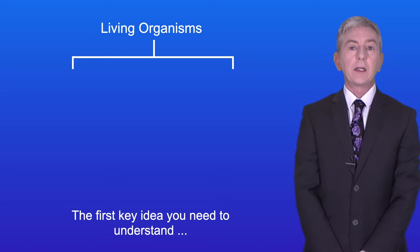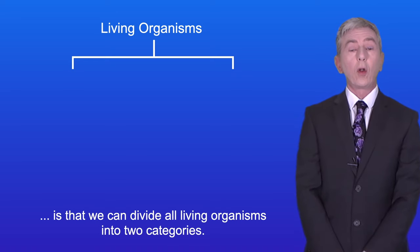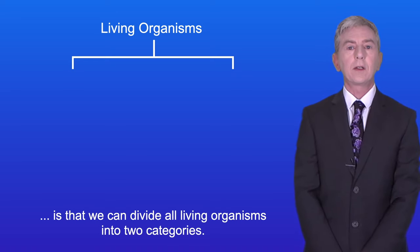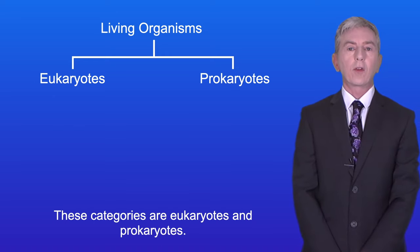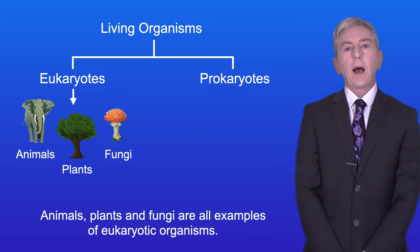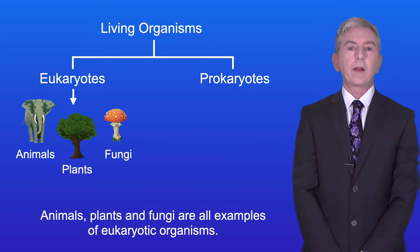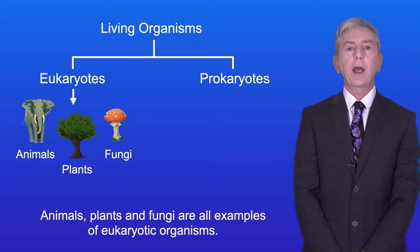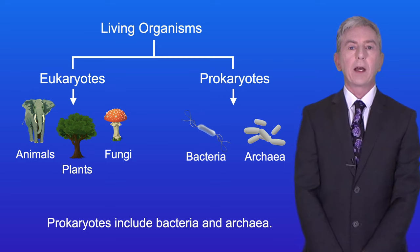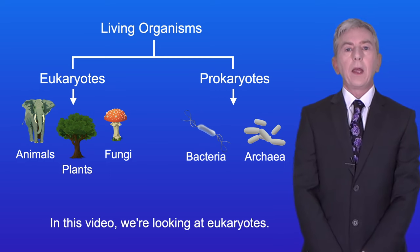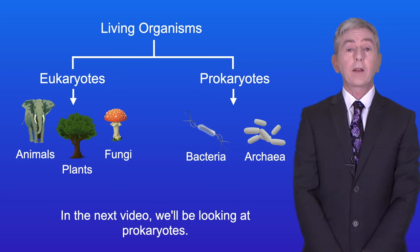The first key idea you need to understand is that we can divide all living organisms into two categories. These categories are eukaryotes and prokaryotes. Animals, plants and fungi are all examples of eukaryotic organisms. Prokaryotes include bacteria and archaea. In this video we're looking at eukaryotes and in the next video we'll be looking at prokaryotes.